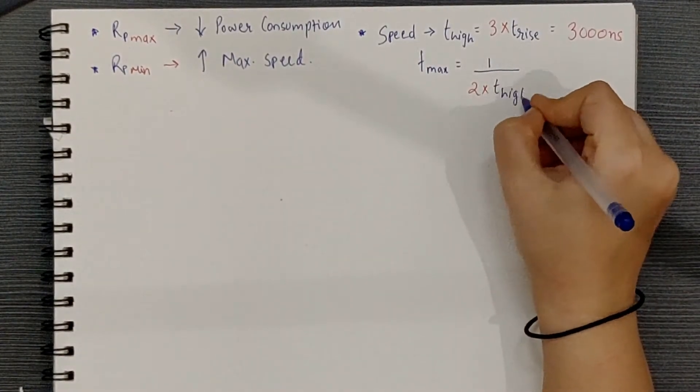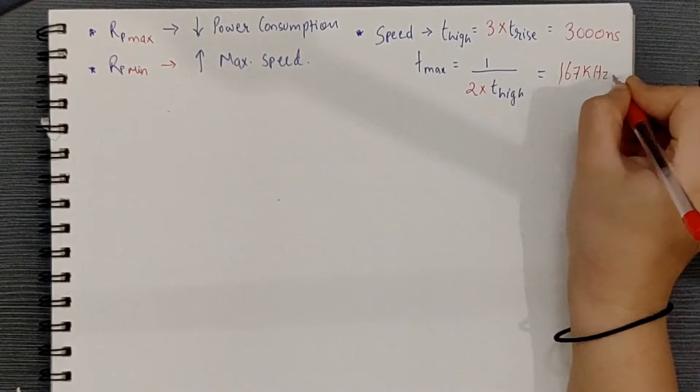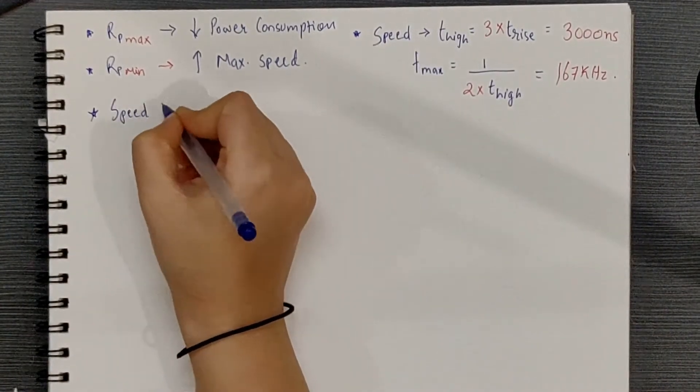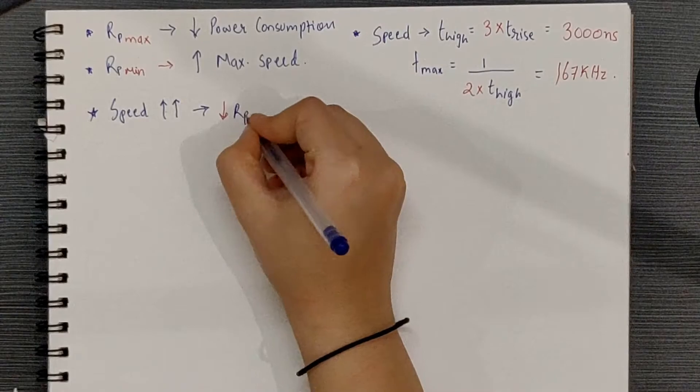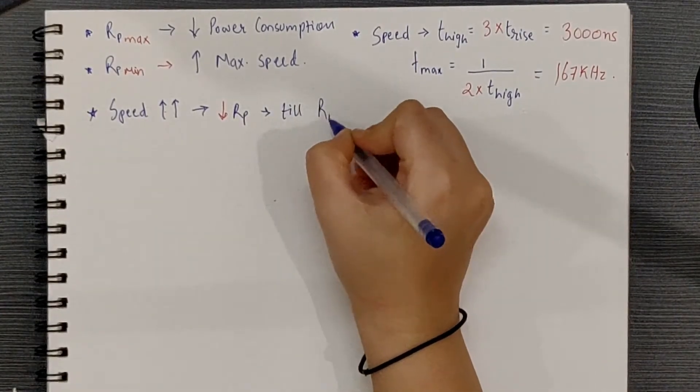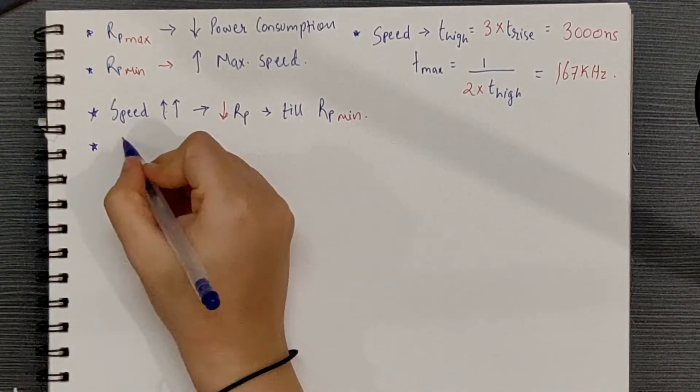Thus, your maximum attainable frequency will be 167 kHz. If you want a higher value, then you can lower the resistance by obviously keeping the minimum value of your pull-up resistor into consideration. Ideally,